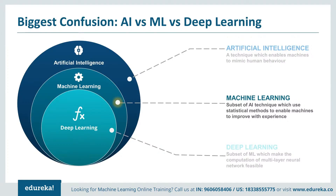Machine learning is a subset or a current application of AI. It is based on the idea that we should give machines access to data and let them learn from themselves. It is a subset of artificial intelligence that deals with the extraction of patterns from data sets. This means that the machine can not only find the rules for optimal behavior, but can also adapt to changes in the world. Many of the algorithms involved have been known for decades — centuries even — and thanks to advances in computer science and parallel computing, they can now scale up to massive data volumes.